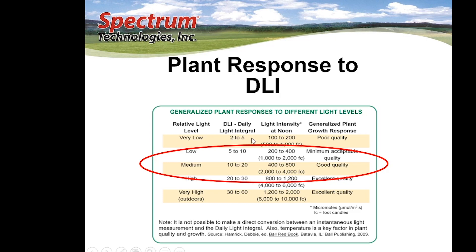Two to five moles per day of light results in poor quality. Ten to 20 moles per day gives us good or average quality. And as we approach or exceed 20 moles per day, we achieve excellent quality plants.